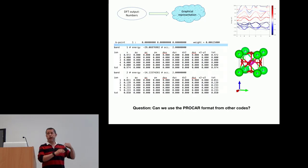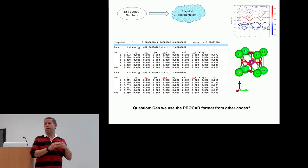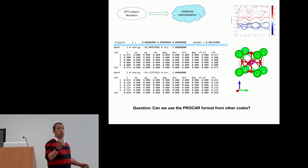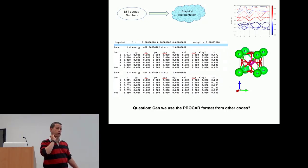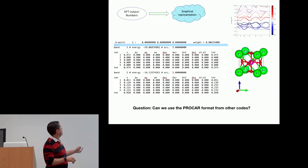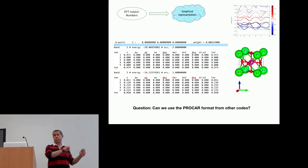If you have a spin polarized calculation, then you have two blocks, and if you have non-collinear data, then you have four blocks. Another facility we also have is that we can do band folding, and for that you also need to store the real and imaginary part of the projections.